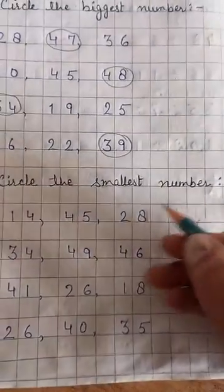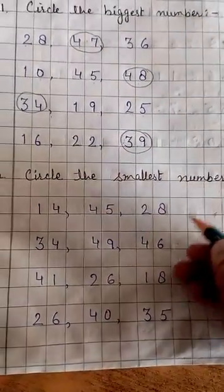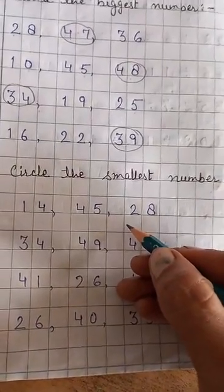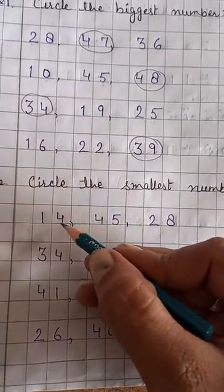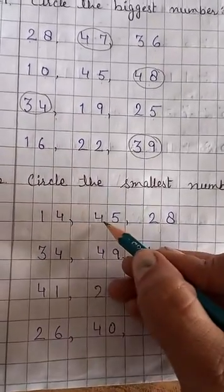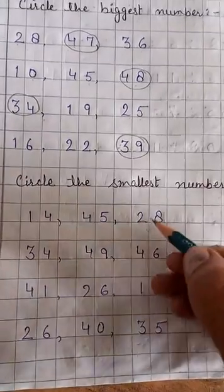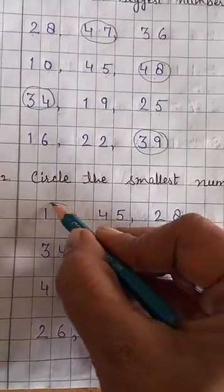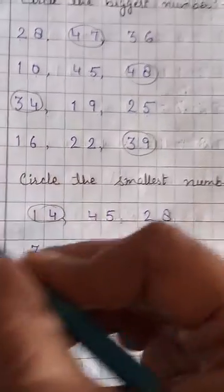Now, circle the smallest number. In these numbers, we have to observe the smallest number. Okay, here is 14, 45 and 28. Which one is the smallest? Yes, 14. Circle it.